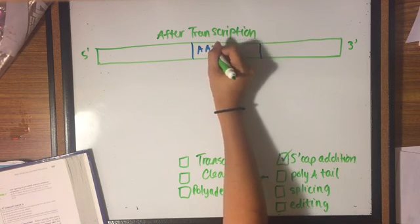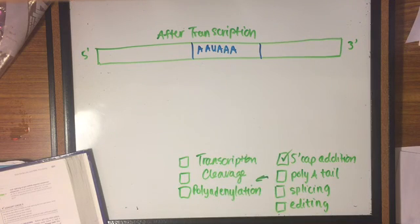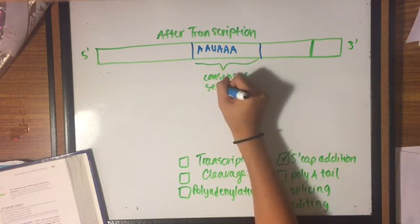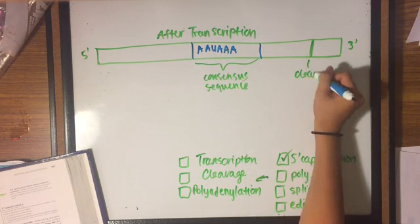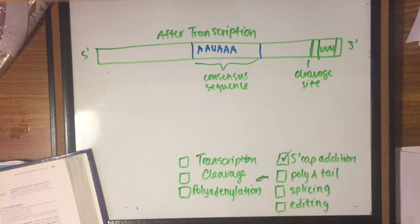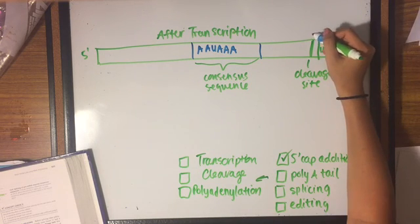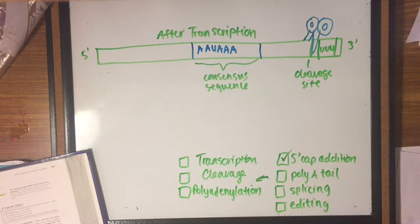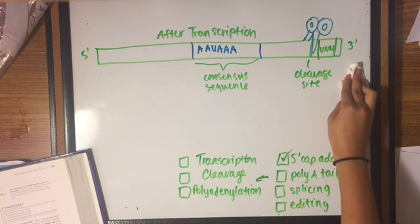After transcription, the pre-mRNA is cleaved at a position from 11 to 30 nucleotides downstream of the consensus sequence in the 3' untranslated region. The consensus sequence determines at which point the cleavage will take place. The addition of adenine nucleotides, polyadenylation, takes place at the 3' end of the pre-mRNA, generating the poly-A tail.